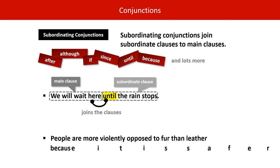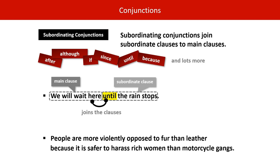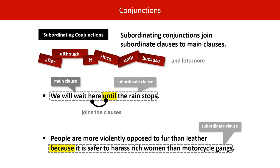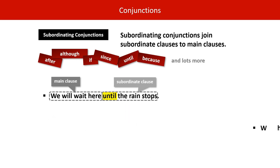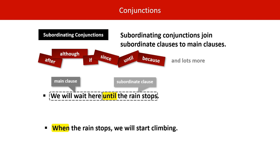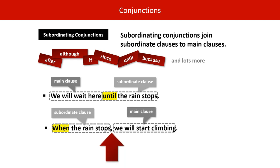Another example: 'People are more violently opposed to fur than leather because it is safer to harass rich women than motorcycle gangs.' Because is our subordinating conjunction sitting inside the subordinate clause, linking it to the main clause. Also, subordinating conjunctions don't always follow the main clause — sometimes they come first. 'When the rain stops, we will start climbing.' When it starts a sentence, it's normal to put a comma after the subordinate clause to show where the main clause starts.